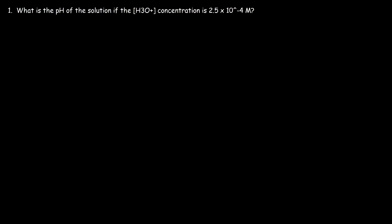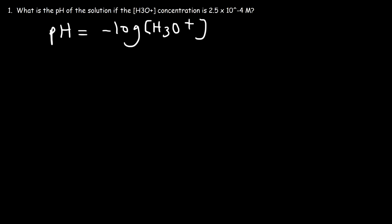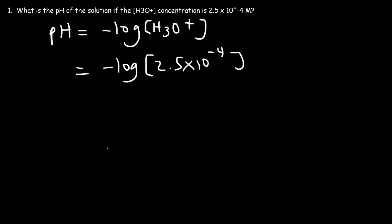I want you to be familiar with some common equations and how to use them. The first formula you need to know is that the pH is equal to the negative log of the hydronium ion concentration. Before you use a calculator, what do you think the pH is going to be if you had to estimate a range? The first number you should look at is the exponent, negative 4.